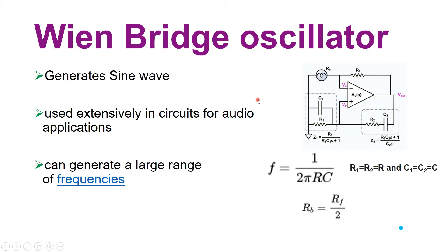In the previous module we discussed the phase shift oscillator, and in today's module we are going to discuss the Wien Bridge oscillator. As the name suggests, it is called Wien Bridge because there is a bridge composed of resistors and capacitors in the feedback loop from the output back to the positive pin of the operational amplifier.